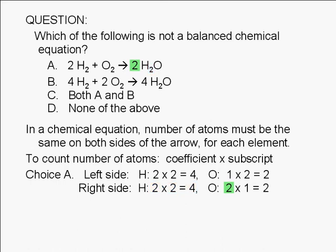The subscript of oxygen in H2O is implied to be 1. We multiply this by the coefficient of H2O to get the number of oxygen atoms on the right. The number of oxygen atoms on the right is 2 times 1, or 2.